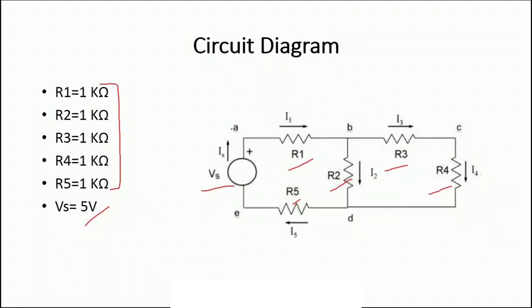We will try to calculate Kirchhoff's current law at different nodes. These are the nodes A, B, C, D, and E. So, we have all these nodes available with us.